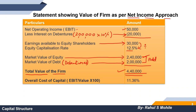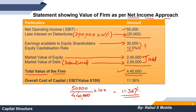Next, we calculate the overall cost of capital. Our EBIT is 50,000. We divide it by the total value of the firm, which is 4,40,000, and multiply by 100. The answer is 11.36%. That is your overall cost of capital. The calculation format and formula are important to understand.